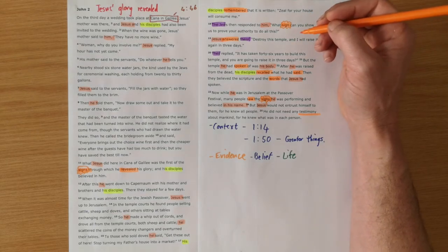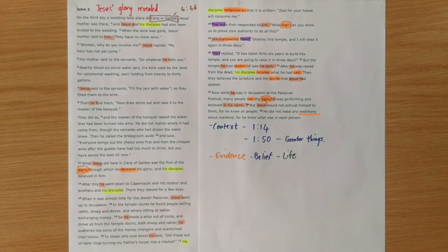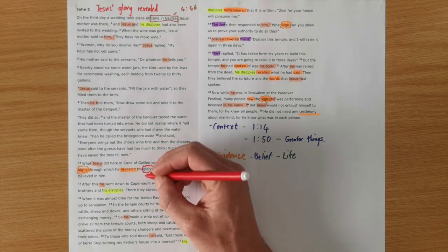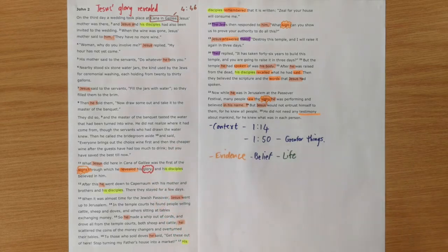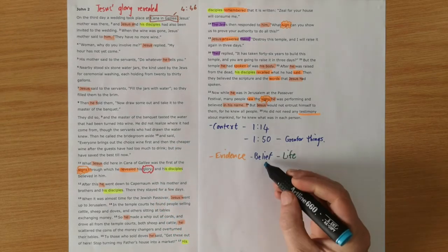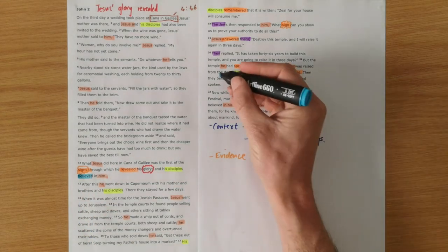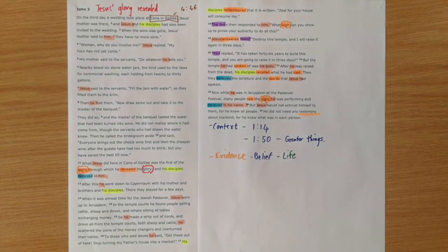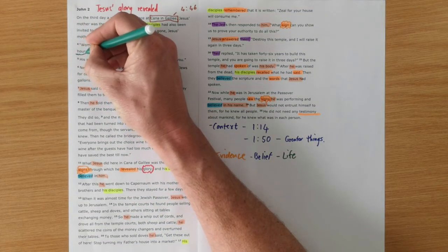So signs is a key theme in the book of John. And in this section, we are given the first sign through which He revealed His glory. So we're told in chapter 1, verse 14, John said, we have seen His glory. And Jesus here reveals that glory and that key theme of belief, and His disciples believed in Him. We're told at the end that they believed the Scriptures, and the crowds believed in His name.